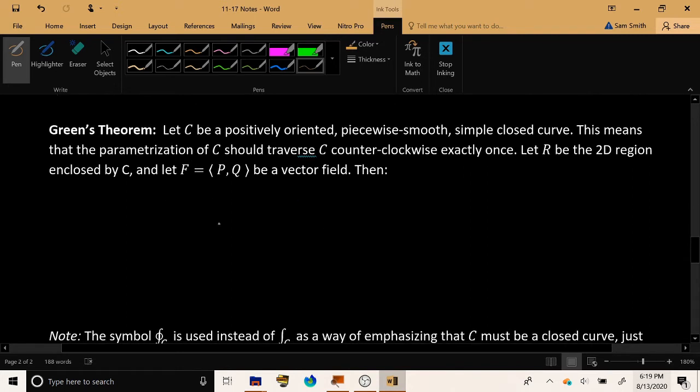So let C be a positively oriented, piecewise smooth, simple closed curve. This means that the parameterization of C should traverse C counterclockwise exactly one time. And let R be the two-dimensional region enclosed by C.